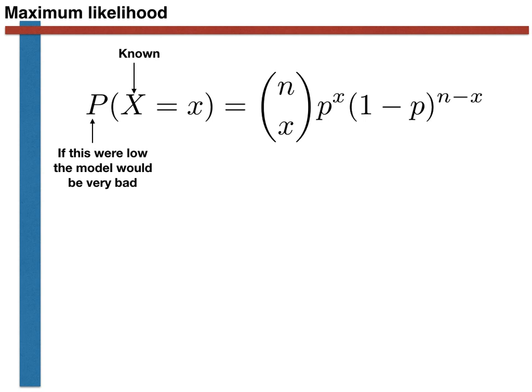What we therefore need to do is adjust the value of the parameter P so as to make this probability on the left-hand side as large as it can possibly be. In other words, we want to adjust the parameter P so as to maximize the value of this probability on the left-hand side.